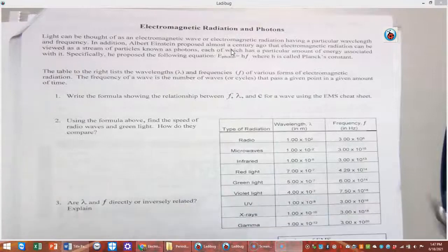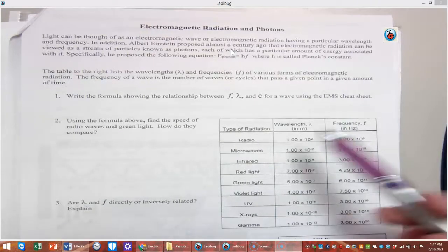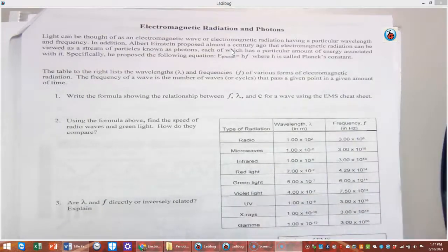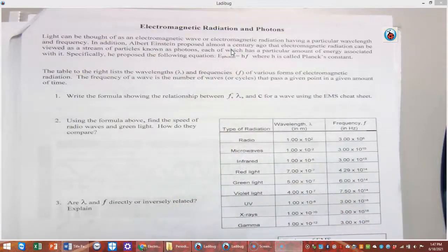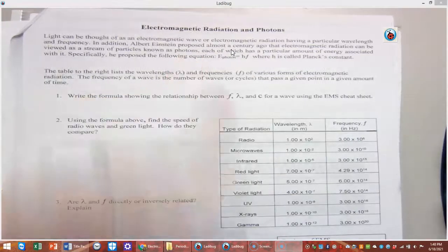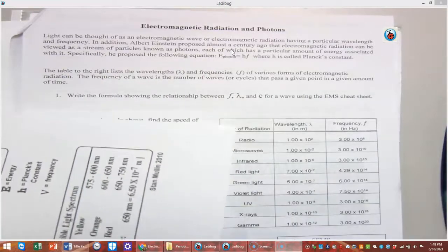Light can be thought of as an electromagnetic wave or electromagnetic radiation having a particular wavelength and frequency. Albert Einstein proposed that electromagnetic radiation can be viewed as a stream of particles known as photons, each of which has a particular amount of energy associated with it.